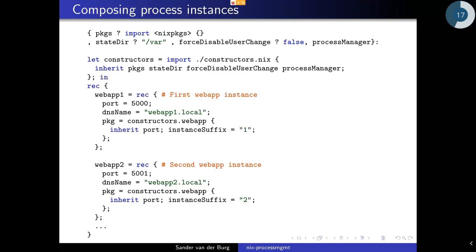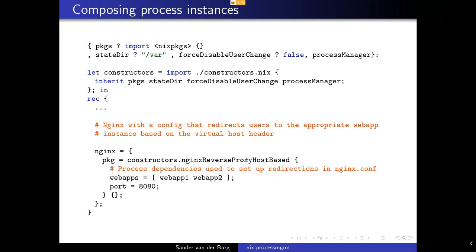In addition to declaring constructor functions to create process instances, you also need to specify what process instances you need, and that is done in a composition model that looks like this. Again, this is similar to the top-level expression in the Nix Packages collection. This declares a function — these are parameters that apply to all instances. What I do here is construct two web instances; they can coexist because they have a unique port number and instance suffix. And in this expression I also construct an Nginx reverse proxy, which is responsible for setting up the redirection.